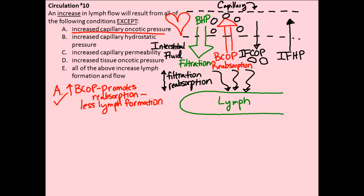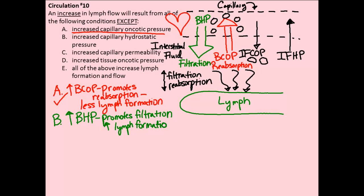For response B, there is an increase in blood hydrostatic pressure. Looking back at our diagram, this promotes filtration, so the tendency here would be to increase lymph formation. More fluid passes out from the capillary into the interstitial fluid, which can then enter lymphatic capillaries. So we can eliminate B as a correct response.